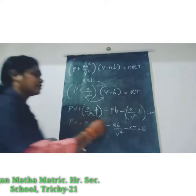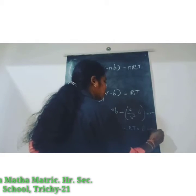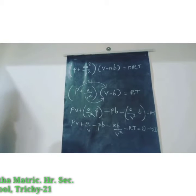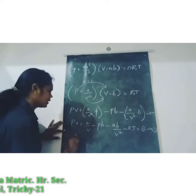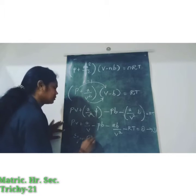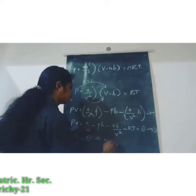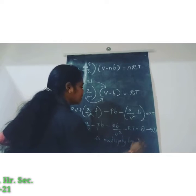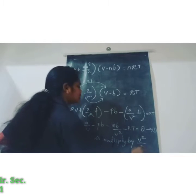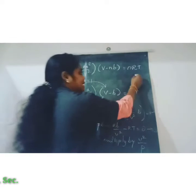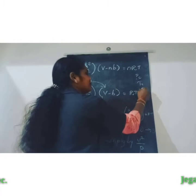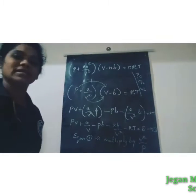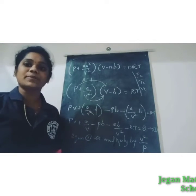Equation 1 is now multiplied by V² divided by P. We aim to find Pc, Tc and Vc, where P represents pressure, T represents temperature, and V represents volume.